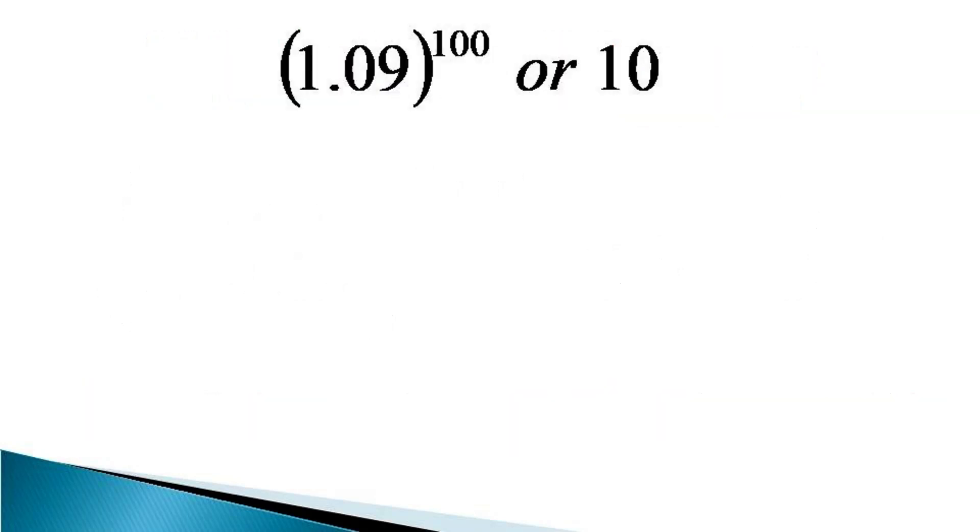To find out the bigger number, we first write 1.09 in the form 1 plus 0.09. So 1.09 raised to the power 100 can be expressed as 1 plus 0.09 raised to the power 100.